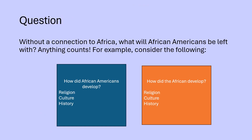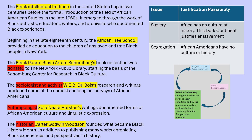The first question we're going to look at: without a connection to Africa, what will African-Americans be left with? We want to think about how African-Americans developed their religion, culture, and history, and how the African developed. Prior to the 1970s, when we're looking at a more inclusive educational system, African-Americans were learning they were enslaved and then segregated. The outcome here is going to be negative because both of those experiences are negative.